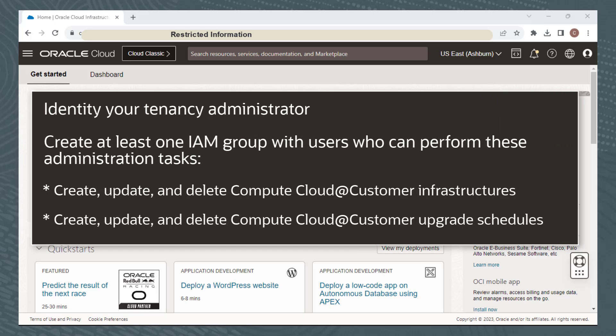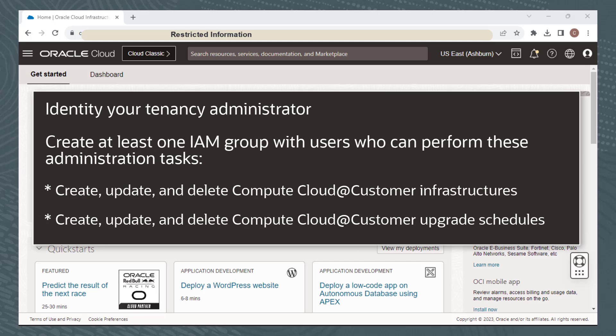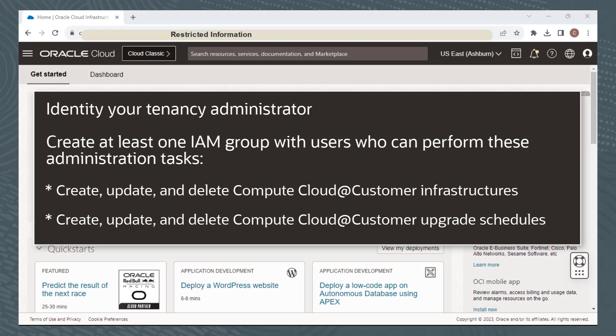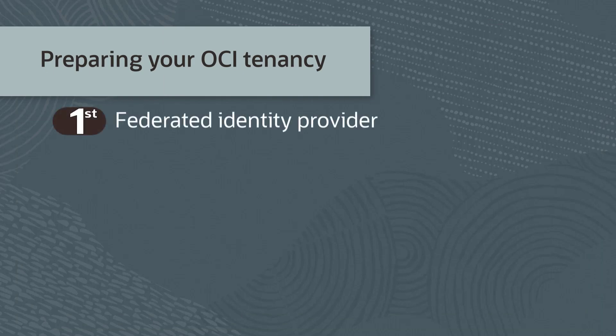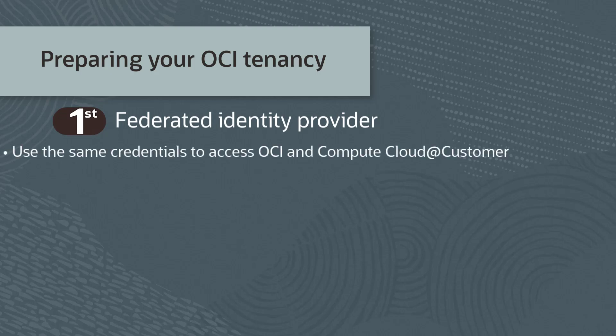Identify your Tenancy Administrator and create at least one IAM Group with users who can perform the following administrative tasks: Create, Update, and Delete Compute Cloud at Customer Infrastructures; and Create, Update, and Delete Compute Cloud at Customer Upgrade Schedules. Recall that when preparing your OCI tenancy, it must be set up to use a Federated Identity Provider to manage authentication. This enables you to use the same credentials to access Oracle Cloud Infrastructure and Compute Cloud at Customer.